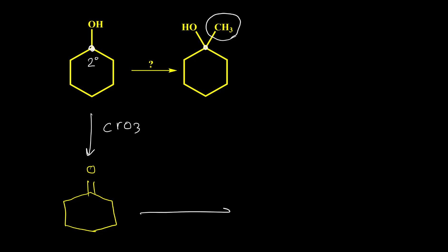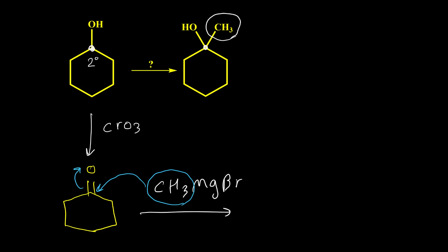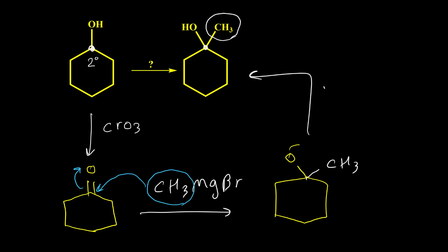Then if we use methyl magnesium bromide, the Grignard reagent, this CH3 negative attacks the carbonyl group and then we have this intermediate. Acidifying this intermediate produces the final product.